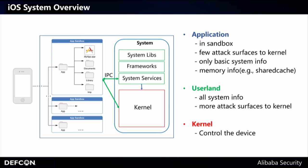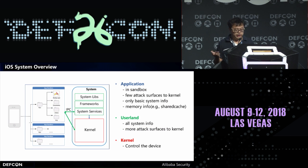Let's have a look at our system. There are three levels in our system. The first level is sandbox applications, which have quite a few attack surfaces to the kernel. The second level is user land system services, including some services called Mach services. In these system services we can have more attack surfaces to the kernel. And the third level is the kernel.